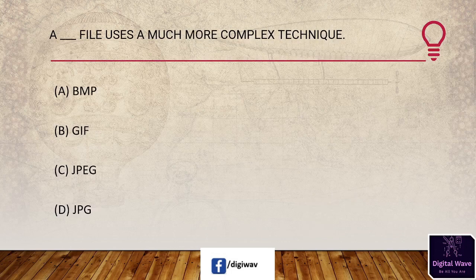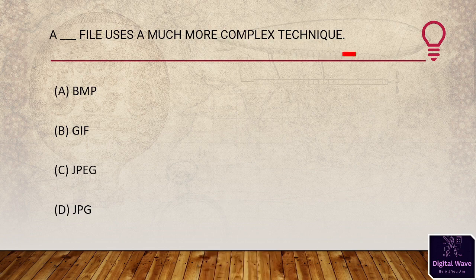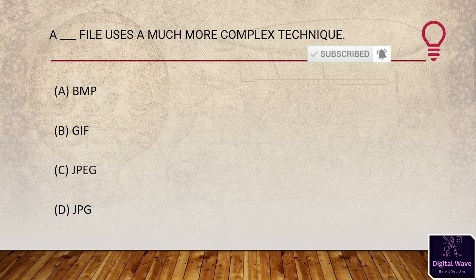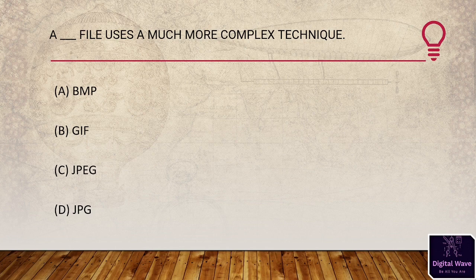Question 22: A blank area file uses a much more complex technique. Options are BMP, GIF, JPEG, and JPG. The right answer will be D, JPG.